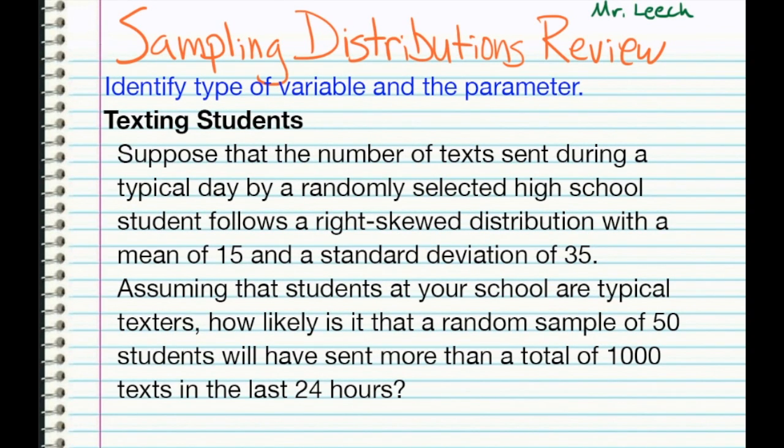And lastly, let's talk about texting students. Suppose that the number of texts sent during a typical day by a randomly selected high school student follows a right-skew distribution with a mean of 15 and a standard deviation of 35 texts. Assuming that students at your school are typical texters, how likely is it that a random sample of 50 students will have sent more than a total of 1,000 texts in the last 24 hours? Again, what type of variable is this? And identify our parameter of interest.